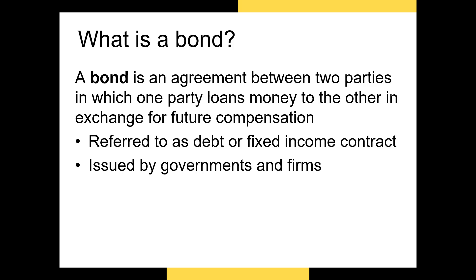Bonds can be issued by a variety of borrowers. Firms issue bonds to fund new capital budgeting projects while governments issue bonds to cover budget shortfalls. There are also some cases throughout history where individuals have issued bonds. An example is the famous Bowie bond, in which musician David Bowie issued bonds to investors who gave him cash in exchange for the future royalties on his music catalog.